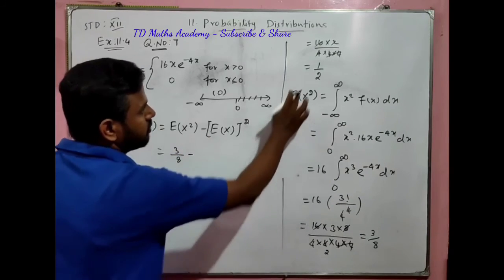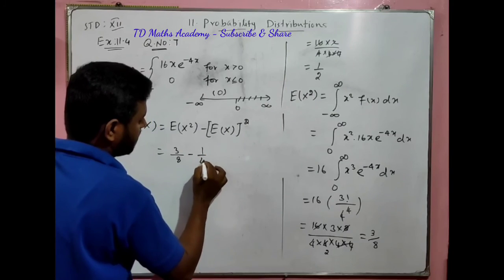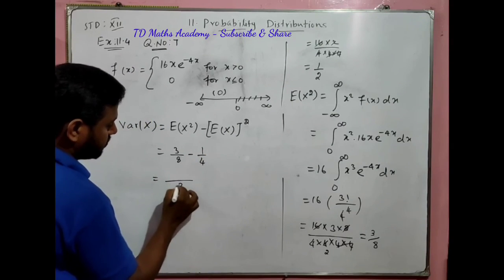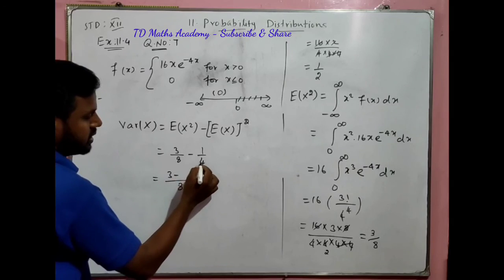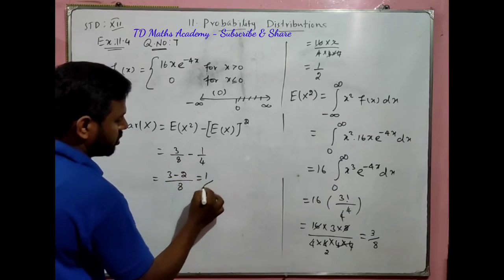Variance equals E(x²) minus [E(x)]². E(x) equals 1/2, squared gives 1/4. So 3/8 minus 1/4 equals 1/8.